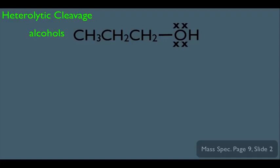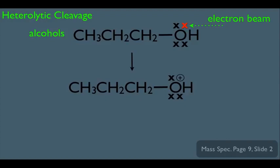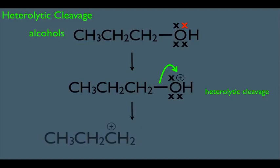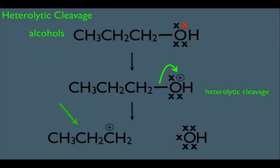It's not only halogens that can cleave this way — alcohols can as well, with the same dynamics. We stick the alcohol in the mass spec, and the electron beam dislodges an electron on the oxygen, giving us a radical cation. If this molecule passes through unchanged, we'd get the molecular ion peak. But because the positive charge is on the oxygen, the electrons in an adjacent bond can jump onto that oxygen — a heterolytic cleavage. We should expect to see a peak at 43 for this alcohol.